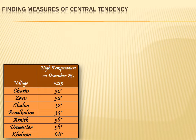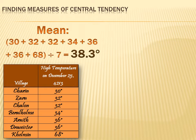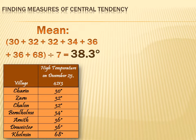We could also use the statistics we already know to understand what's normal, what's typical, what the central tendency is. Let's try the mean first. To calculate the mean, we get the sum of all the data points and divide by the number of data points. There are seven data points, so we take the sum of all those numbers and divide it by seven. The result is 38.3 degrees.